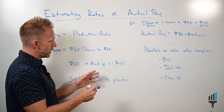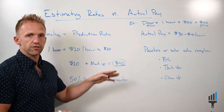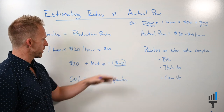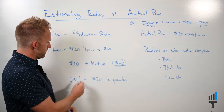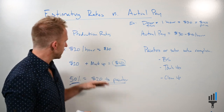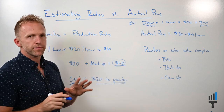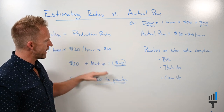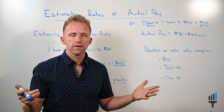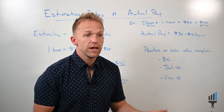Then we mark it up - for simplicity's sake let's say we mark it up by double - so the job is $40 to the customer. Then 50% of that is what goes to the painter, and that's where people say 'that's not fair.' But I estimated $20 for that hour of work, and that's what they're going to get. Now, if they do a terrible job, do they even deserve $20 an hour? If they do a phenomenal job, don't they deserve more?